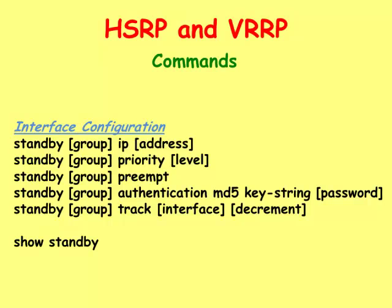The standby IP command activates the Hot Standby Router Protocol feature and creates the virtual IP address. The standby priority command sets the priority level for the group. The standby preempt command allows the router to become the active router again after it has lost that status. The standby authentication command allows packets to be sent to other routers in an encrypted form. The standby track command monitors interfaces and will decrement the priority value if the monitored interface goes down. The show standby command shows the configuration of HSRP.